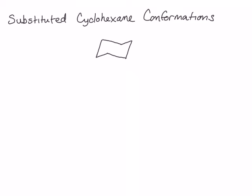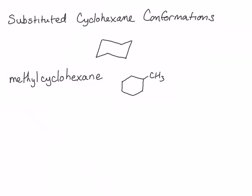Let's look at an example of a mono-substituted cyclohexane ring — methyl cyclohexane. When we draw methyl cyclohexane in the chair conformation, we can put the methyl substituent either in the axial or the equatorial position. We will start with that methyl substituent in the axial position. If the methyl on this carbon is in the axial position, the hydrogen then will be in the equatorial position.